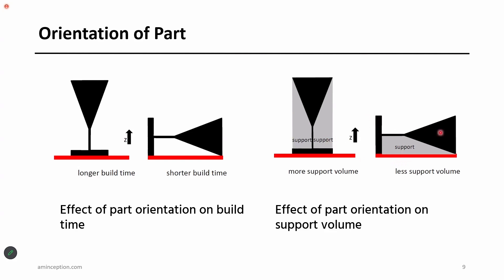If you produce a part in a 3D printer in the first case orientation, it needs support structures in the gray areas. If you orient the part in another direction, it needs support structures in a different location. Orientation of a part when preparing a build in slicer software is important. Part orientation affects what support material is required and also surface finish — support structures don't give very good surface finish after they are removed.